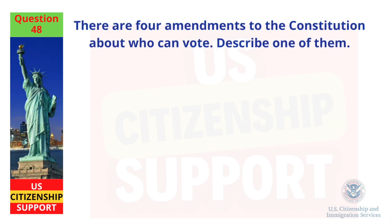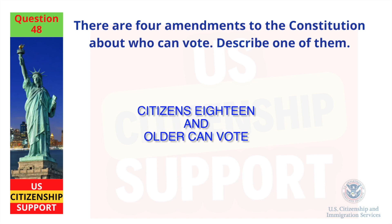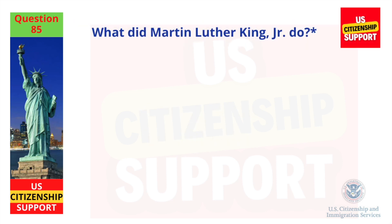There are four amendments to the Constitution about who can vote. Describe one of them. Citizens 18 and older can vote. What did Martin Luther King Jr. do? Fought for civil rights.